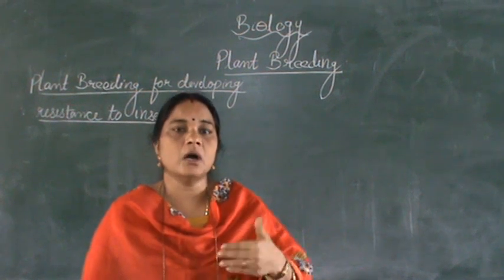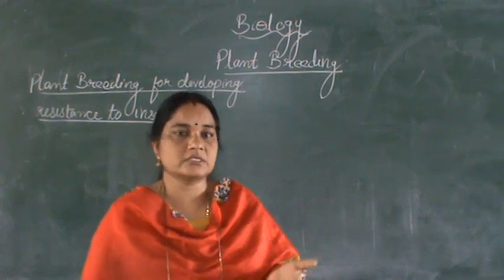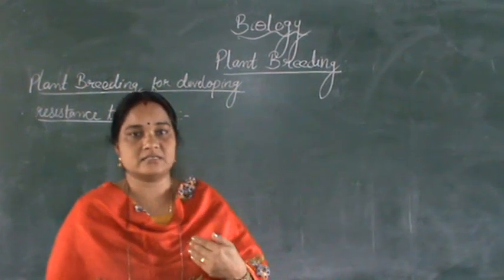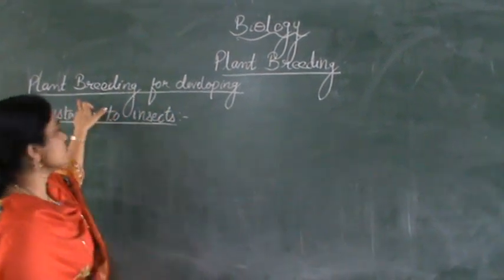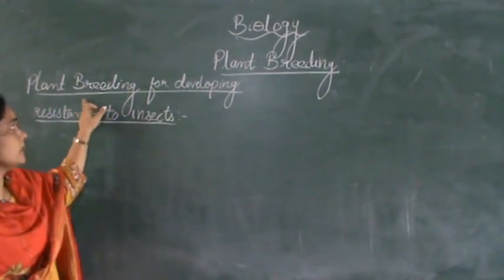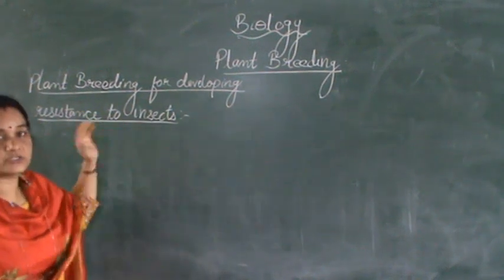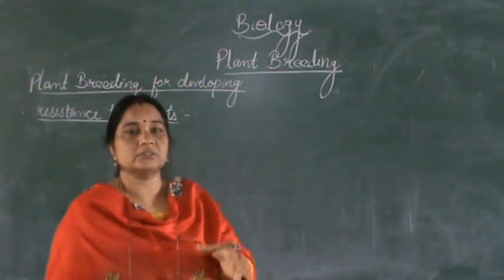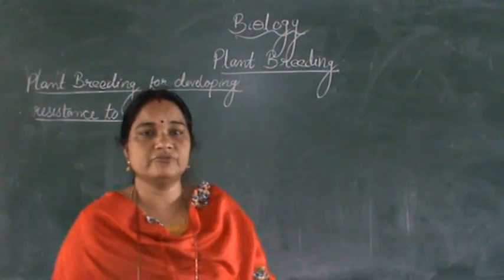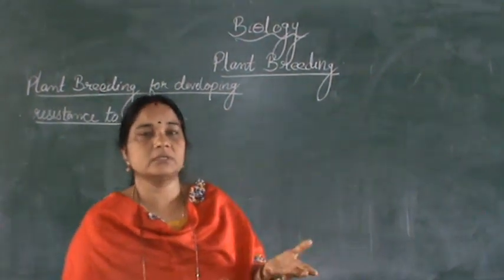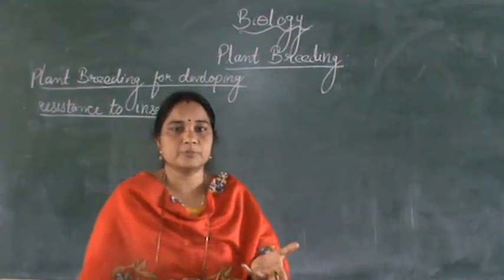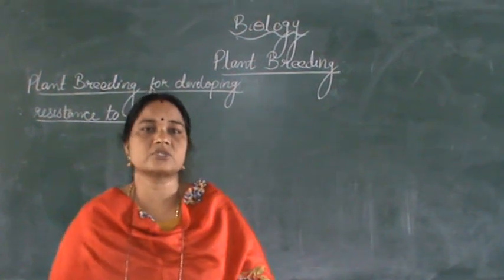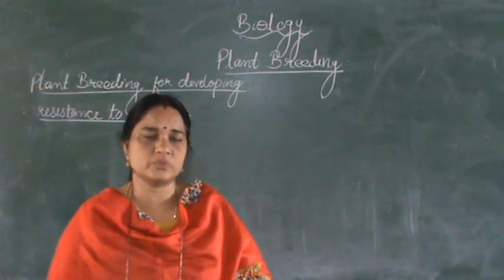Today we will be studying how to increase plant resistance towards insects. That is the next topic we are going to deal with: plant breeding for developing resistance to insects. The major problem for crop cultivation is nothing but the problem of insects, and large-scale destruction of crops is done by various insects.